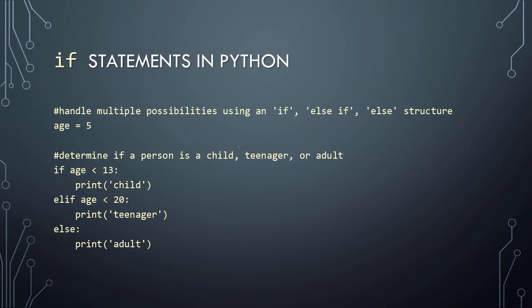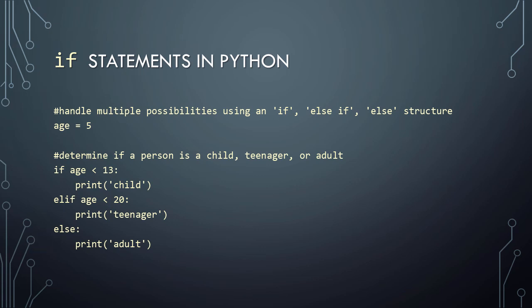We can extend this if-else structure to handle multiple possibilities by using an if-elif-else structure. In this example, we begin by declaring an age variable and setting its value. We then use an if-elif-else structure to determine if a person is a child, teenager, or adult based on the person's age. We first check if the person's age is less than 13 — if so, then we know that the person is a child. If not, then we next check if the person's age is less than 20 — if so, the person's age is between 13 and 19, making them a teenager. If not, then we know that the person must be 20 or older, which makes the person an adult.